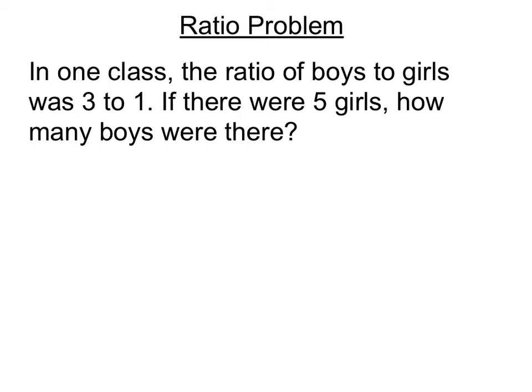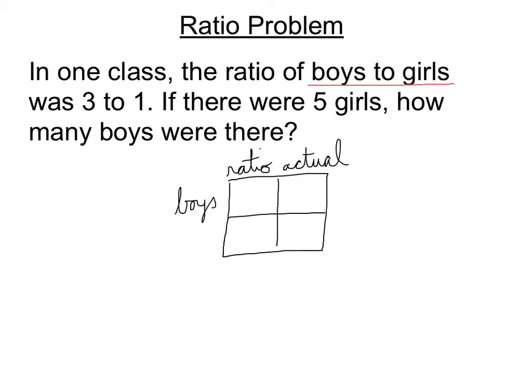Well, we're going to start with a ratio box. The benefit of the ratio box is it helps us organize the information. And this column is always the ratio. And the second column is the actual. Now, if we look at the story problem, the ratio is the ratio of boys to girls. So those are my two groups. So the first number in the ratio is the number of boys. And the second row, I'm going to label girls.